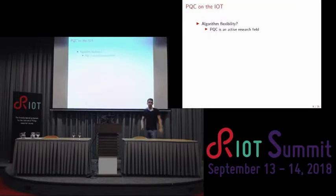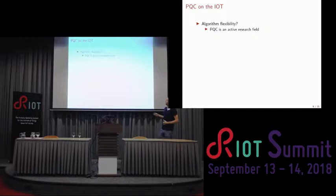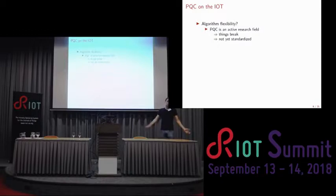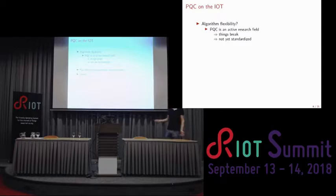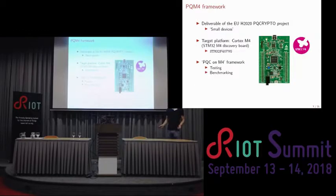How does this apply to the Internet of Things? Flexibility is always a bit of an issue — you embed something in your system, deploy it in the field, and it should run for a long time. So PQ crypto is relevant if you want your stuff to be around for a while. But it's an active research field — stuff is still breaking, algorithms are being adjusted, and it's not yet standardized. There's also some discussion on key sizes: everything is a bit bigger and possibly a bit slower.